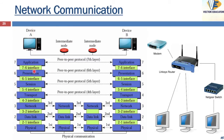At the sender, data transfer moves from the top layer — the seventh layer — down to the first. At the receiver station, the data moves from the bottom layer to the top. During transmission, the data passes through intermediate devices such as routers and switches. At these devices, only the first three layers are involved.